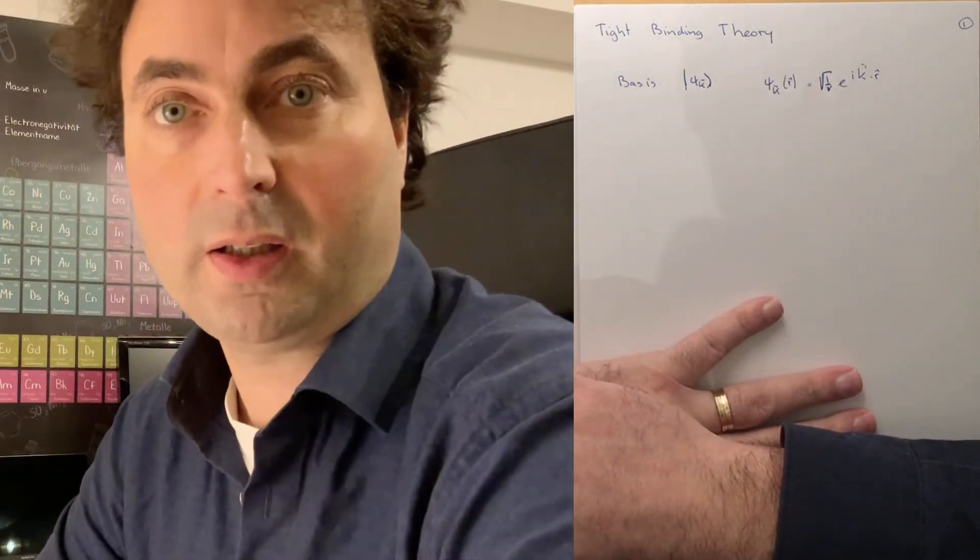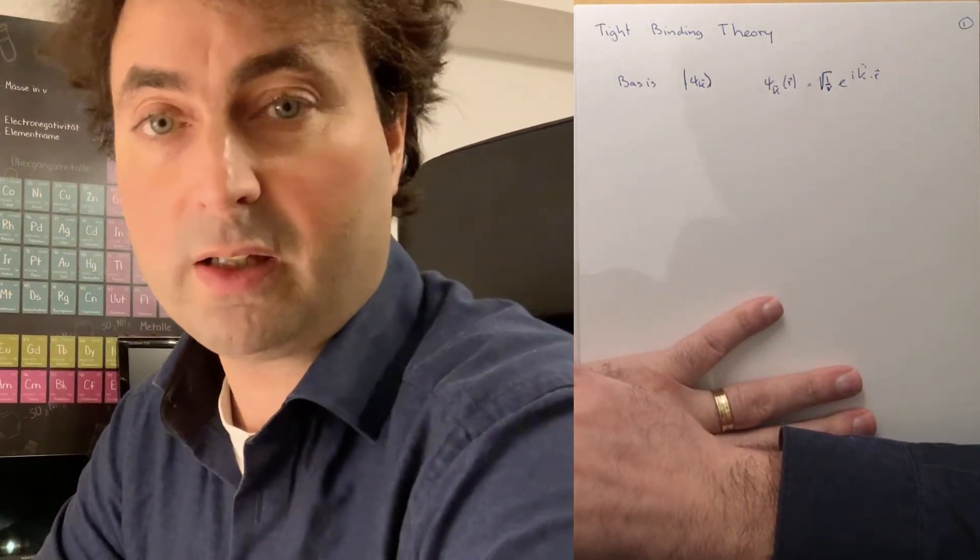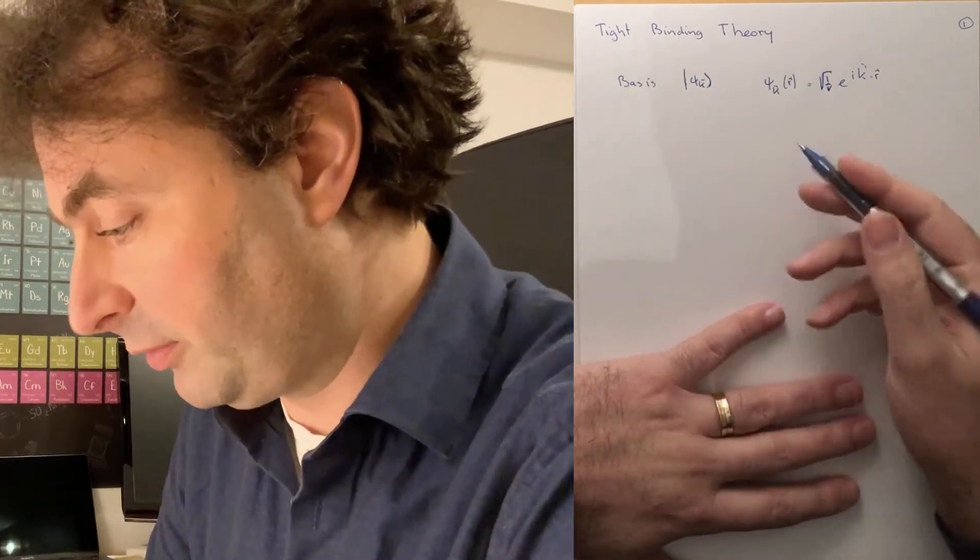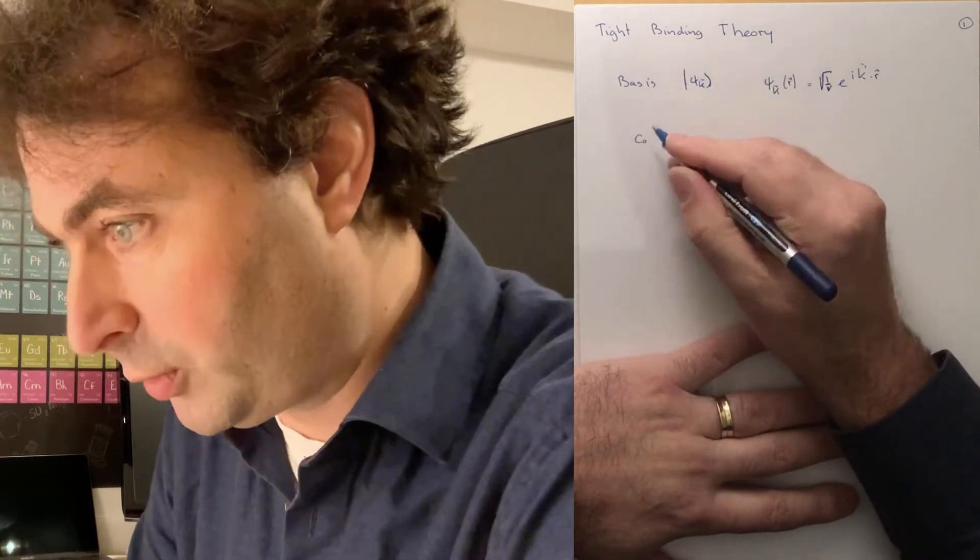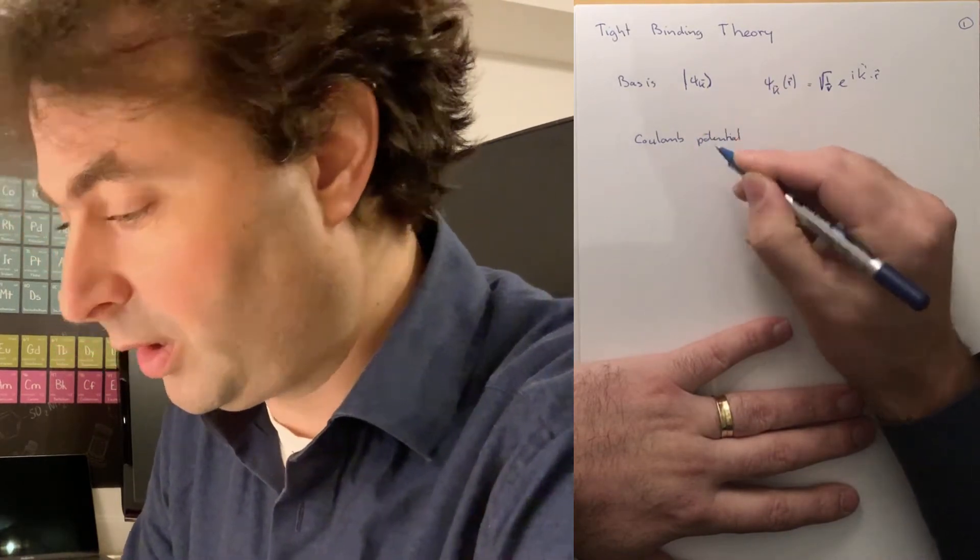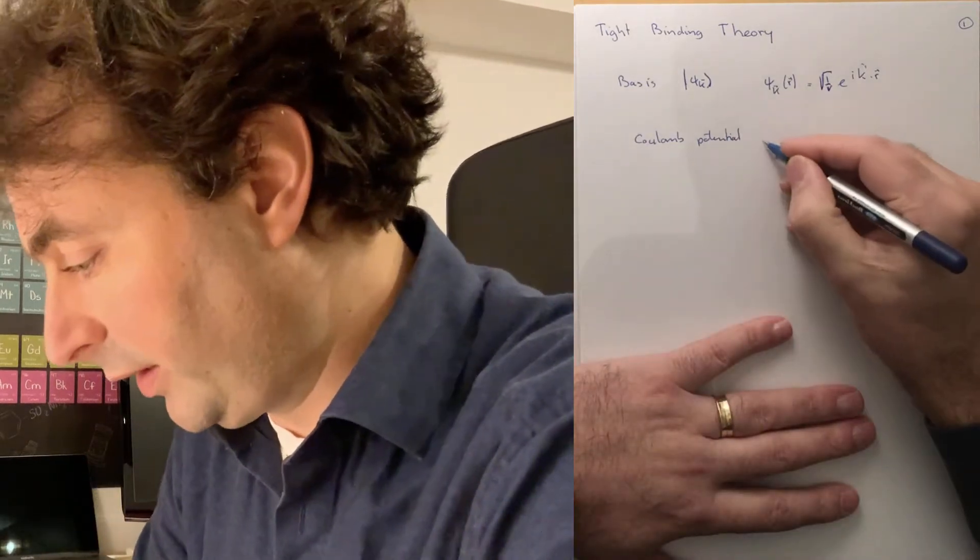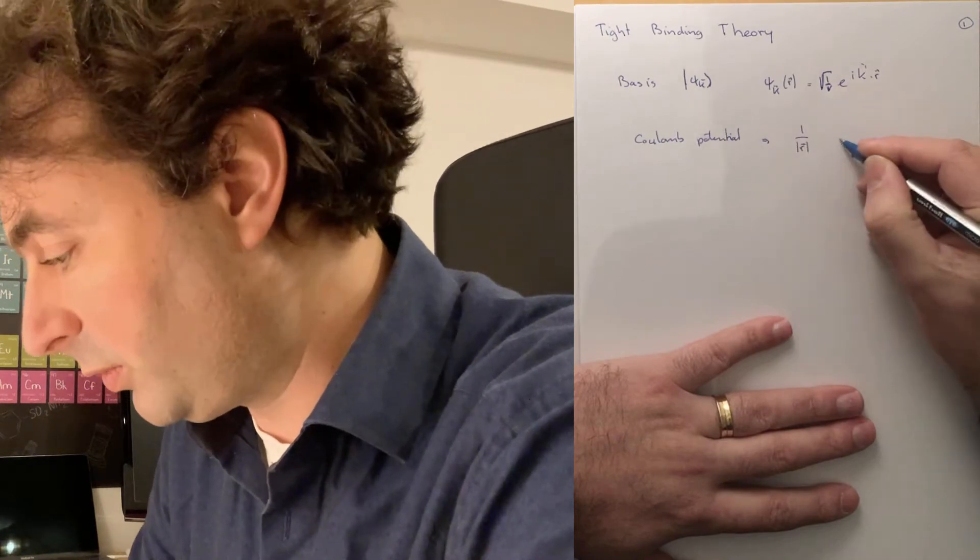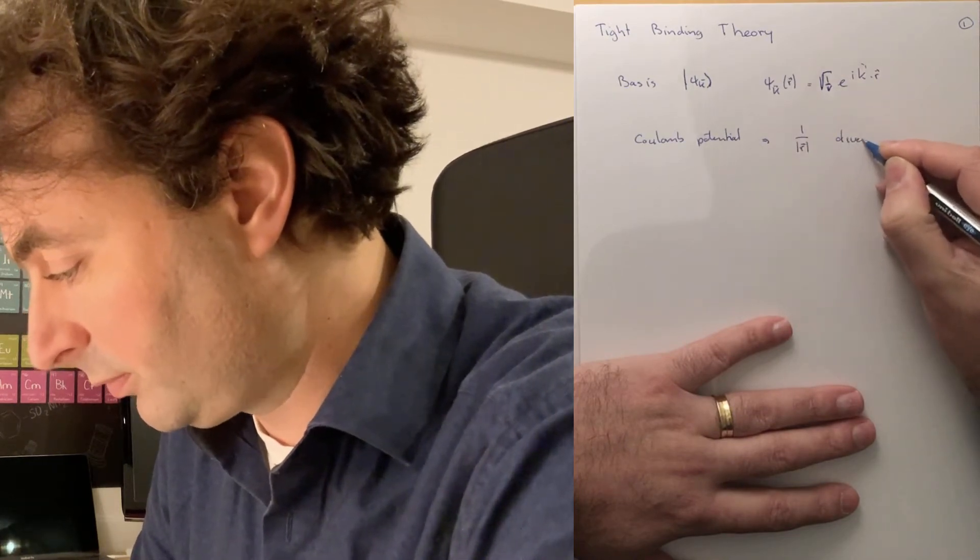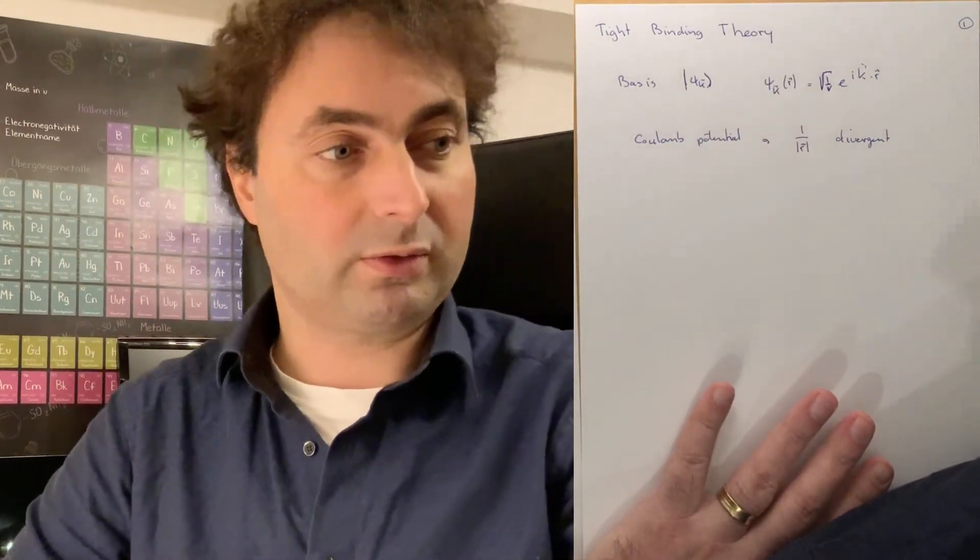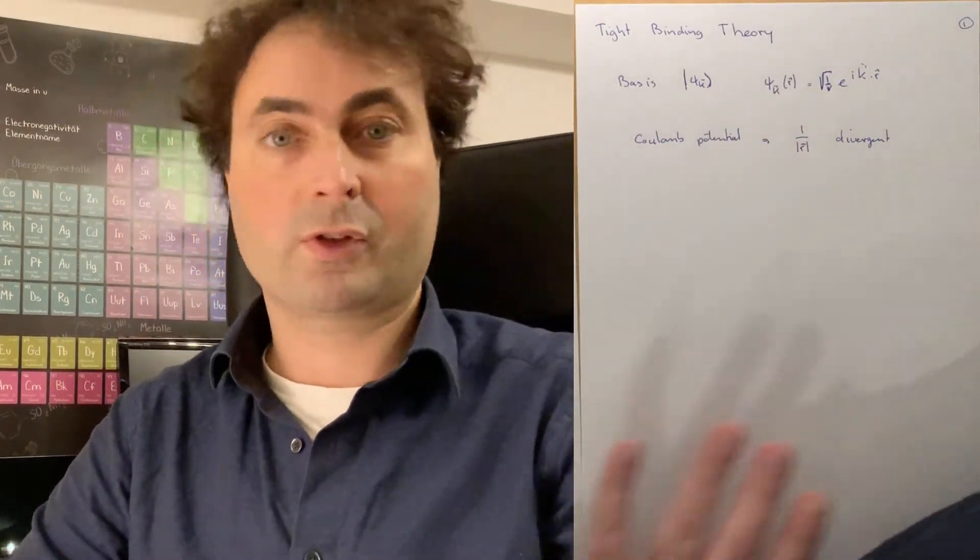Now, when we think of the interaction that we have, that is mixing two states with the same crystal momentum but different momentum, then that is of the form of a Coulomb interaction. Either between the electrons or between the electrons and the nuclei. But in the end, they have the form of a 1 over r potential. And this potential is divergent when the distance between the particles becomes zero.